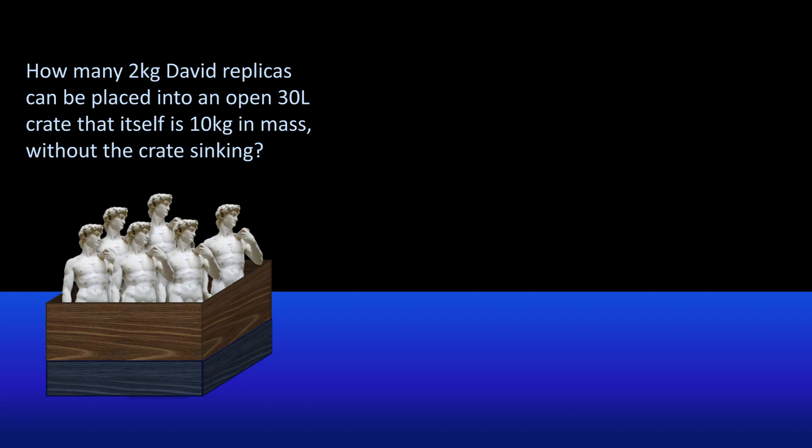Another way to look at this is to say that the weight of the crate plus that of the maximum number of statues equals the weight of the maximum volume of displaced water. So the weight of the crate is the mass of the crate times g. The weight of the statues is n, where n represents the maximum number of statues times the mass of each individual statue times g. And the weight of the maximum displaced water is the density of water times the full volume of the crate times g. As happens with many buoyancy problems, g cancels out.